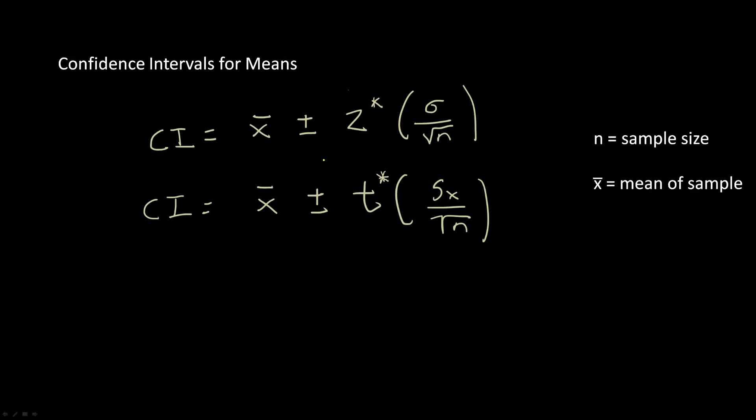So how exactly do you solve for confidence intervals? Well, for means, you use these two equations over here. So how do you choose which equation to use? If you know the standard deviation of the population that you are gathering data on, you use the top equation right here. And if you don't, use the second one.